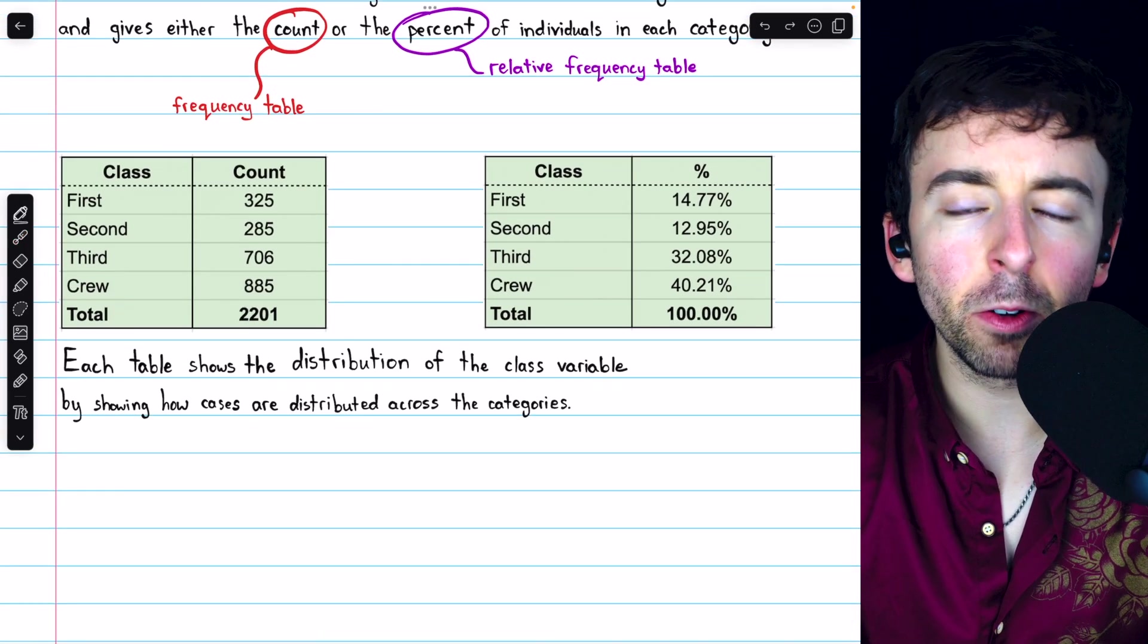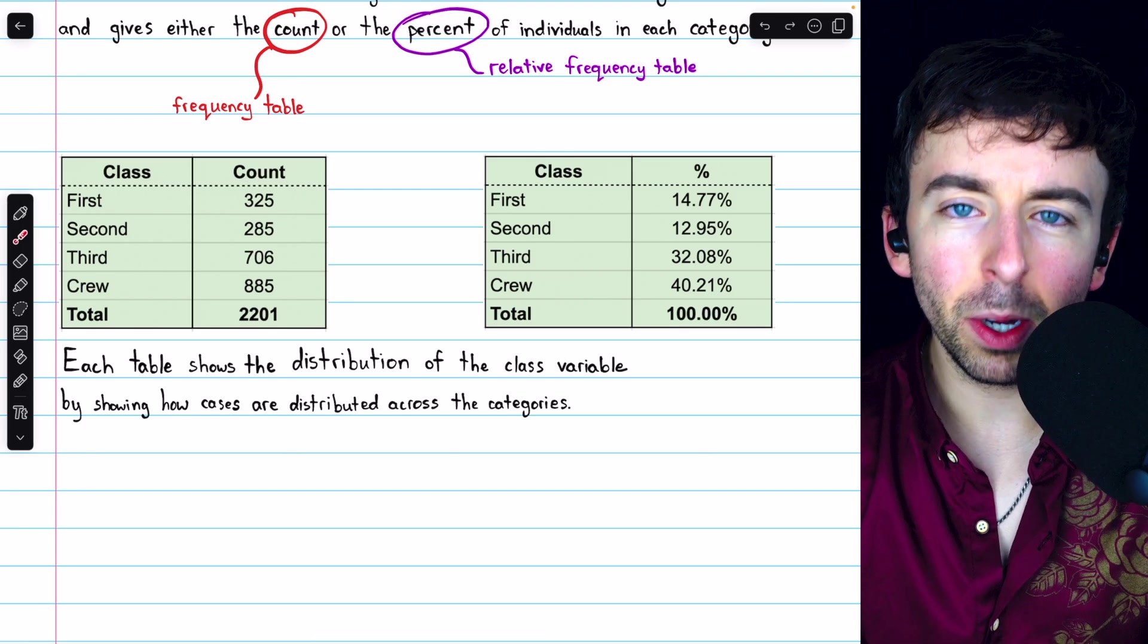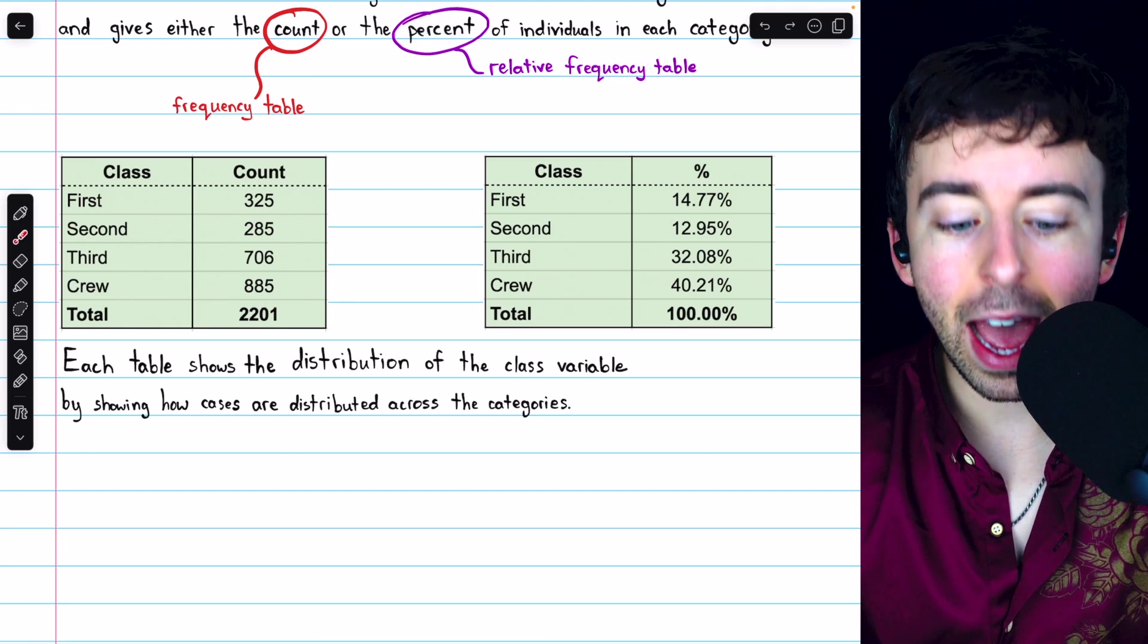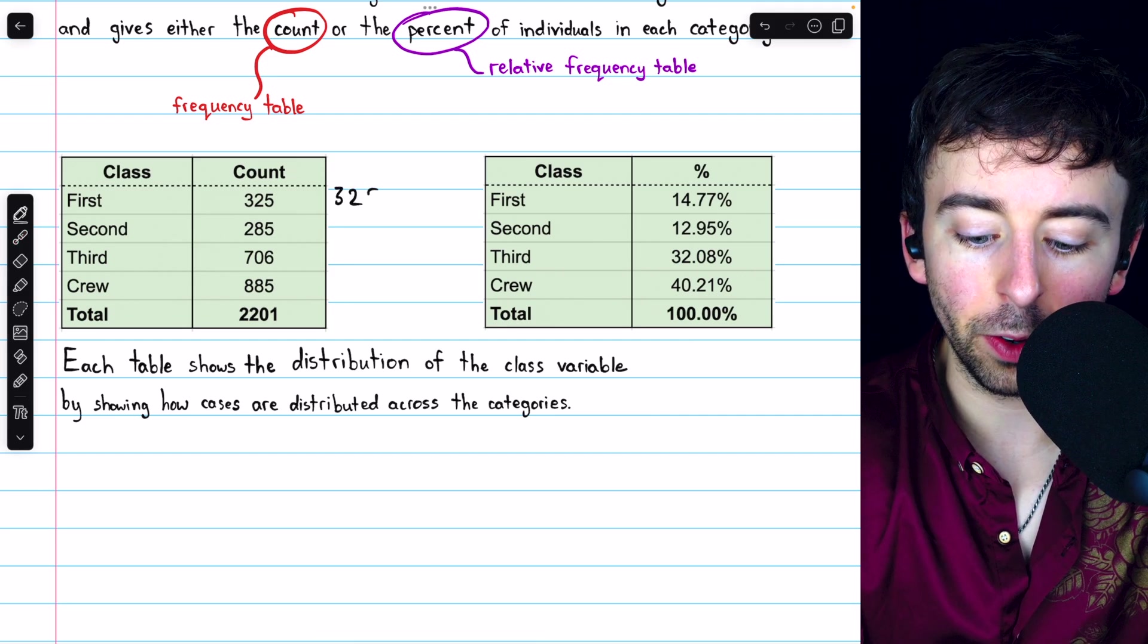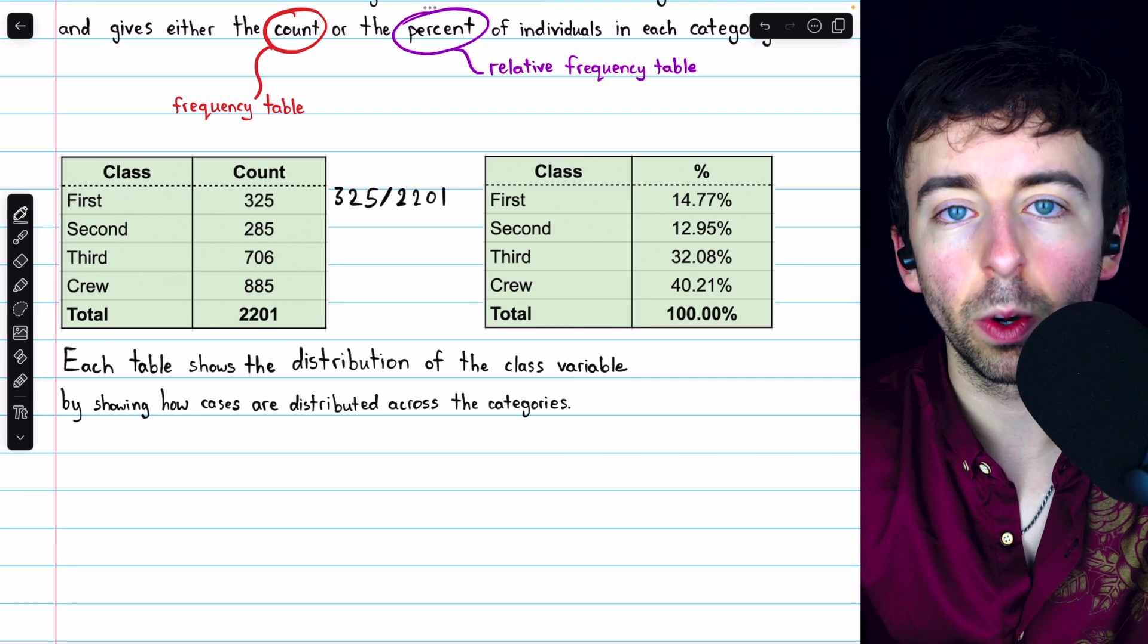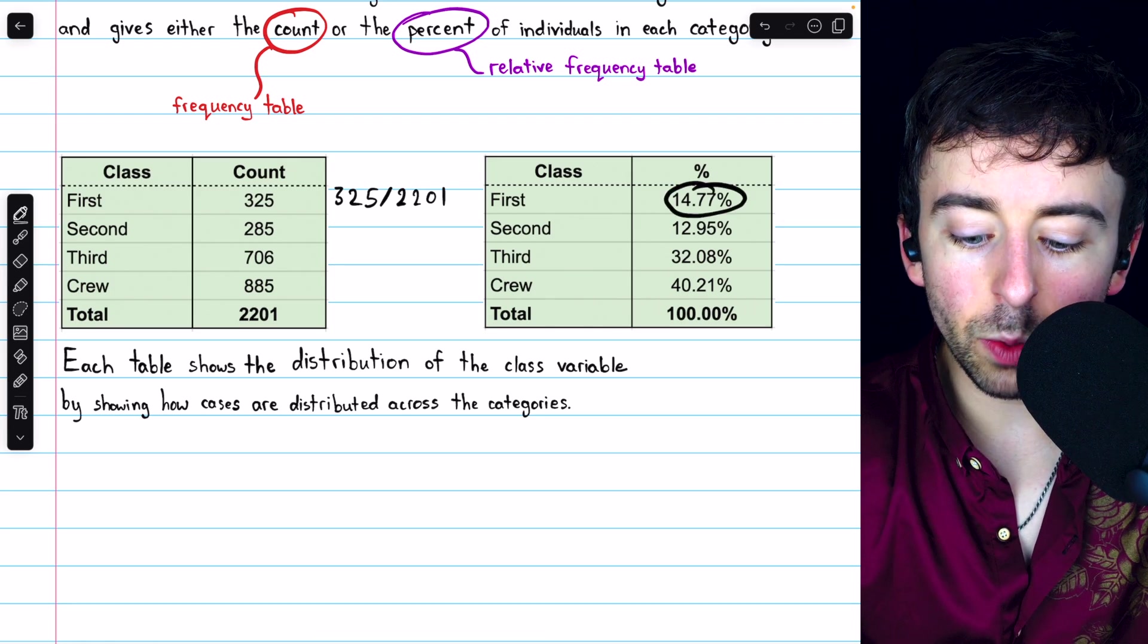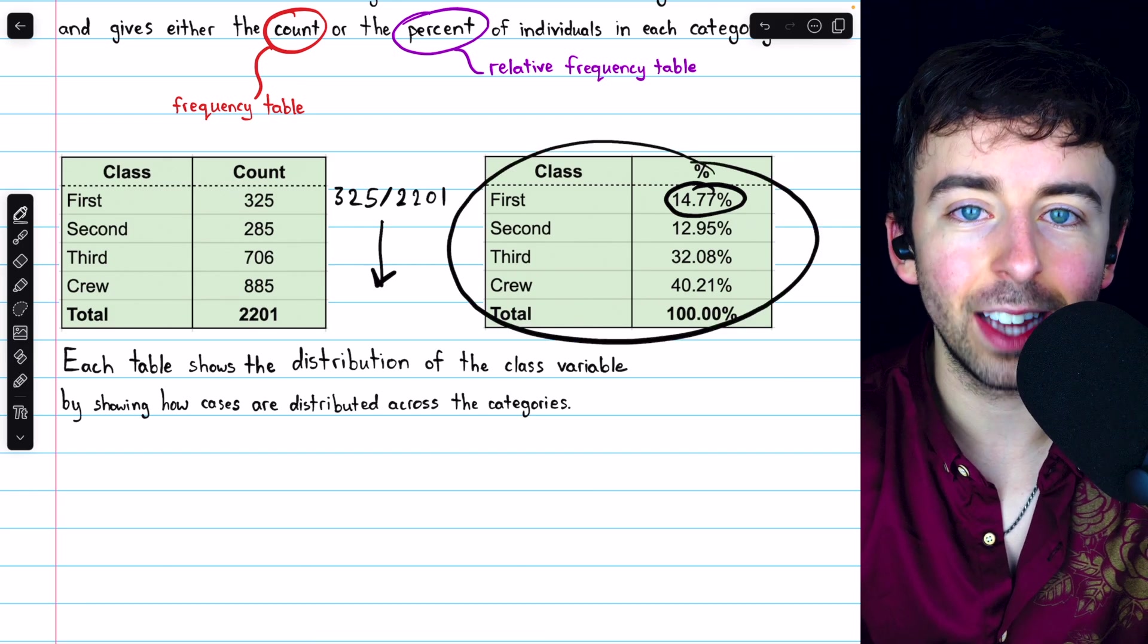Oftentimes, it may be better to know not exactly how many people were first class, but what percent of people relatively were first class. For that, we use a percent. We can take the number of people who were first class, 325, and divide by the total to see the percent of people which were first class. That gives us 14.77%, and we can continue in this way to construct a relative frequency table.